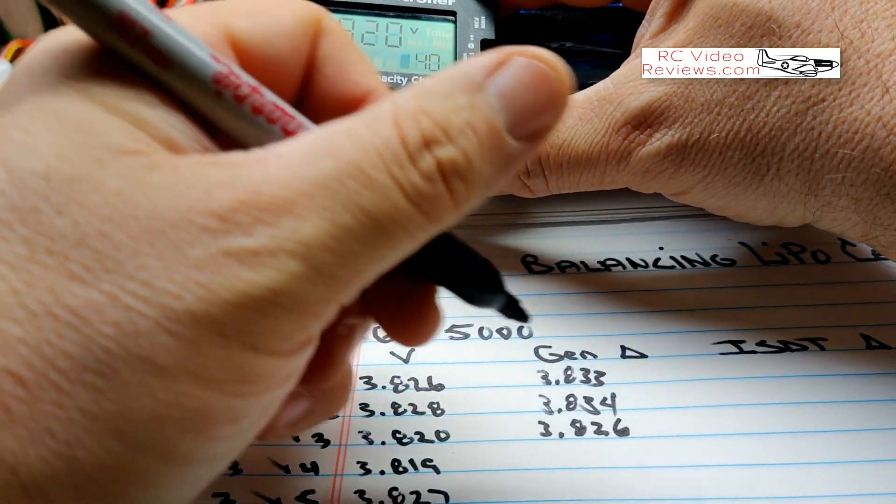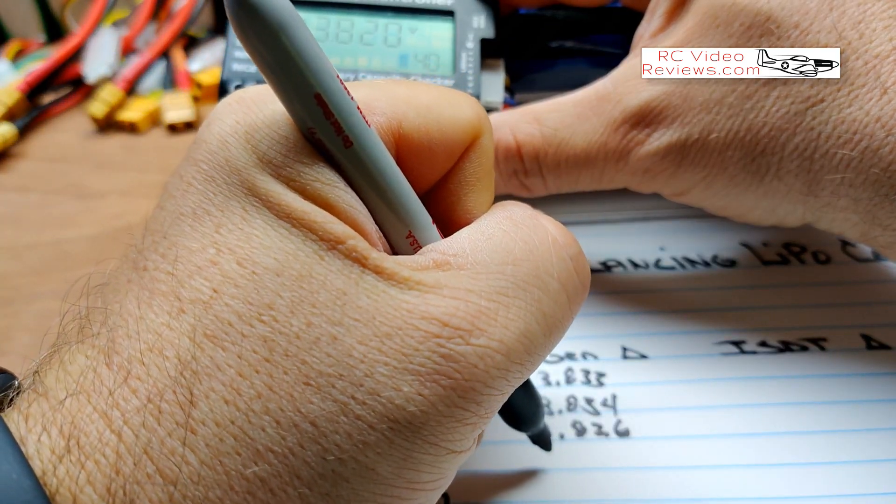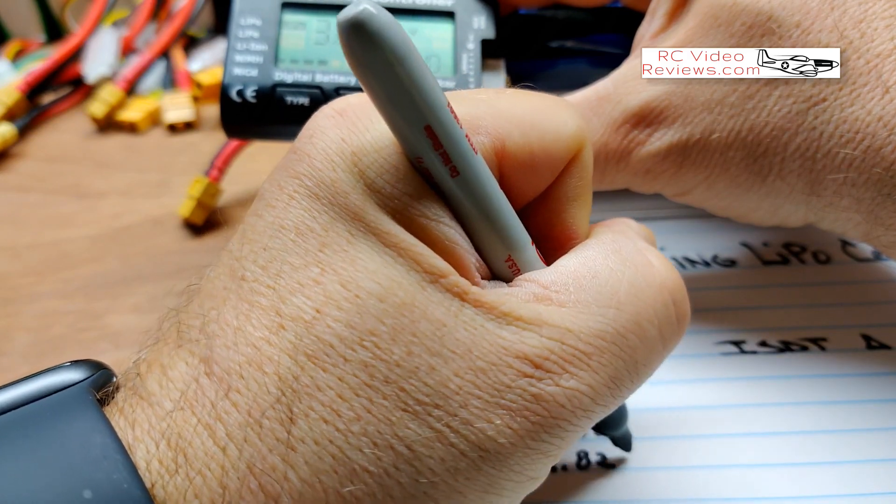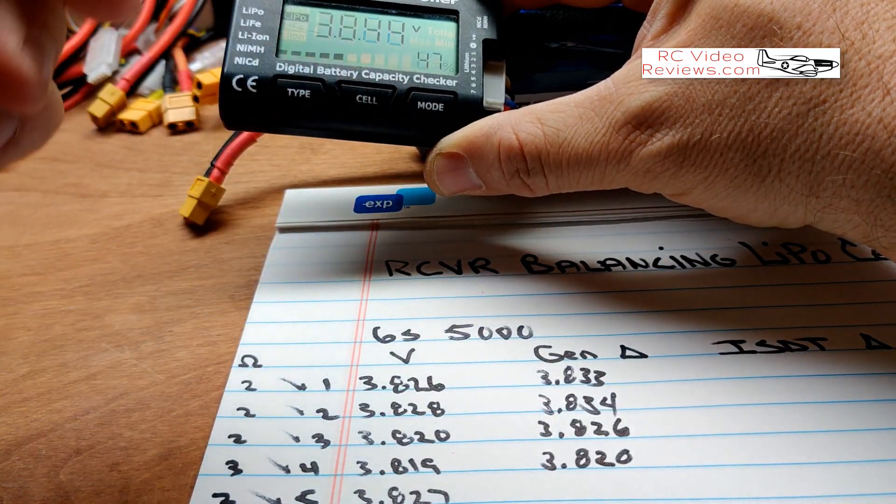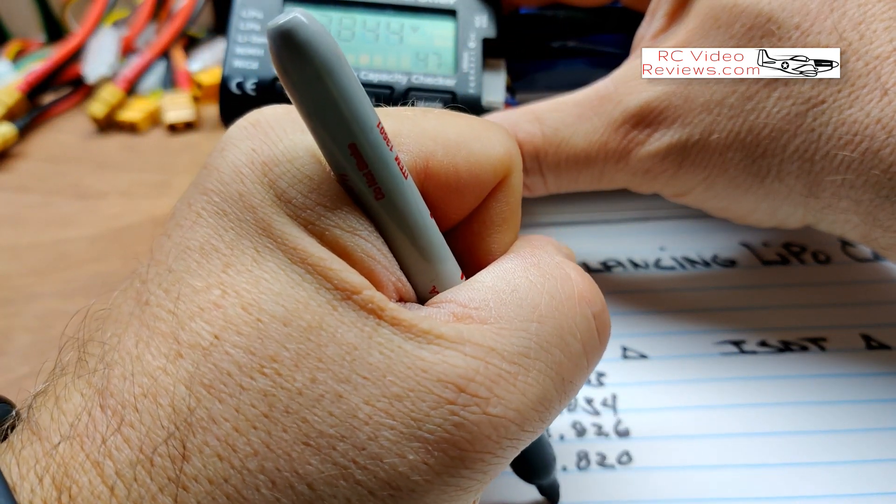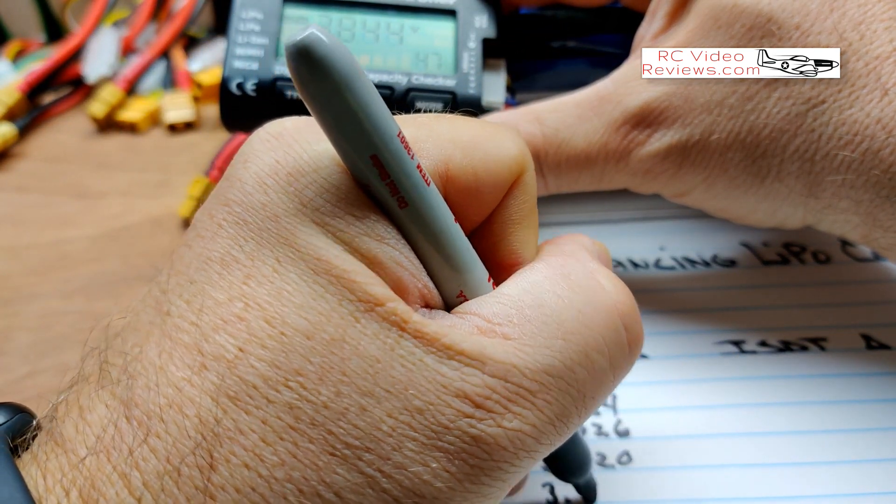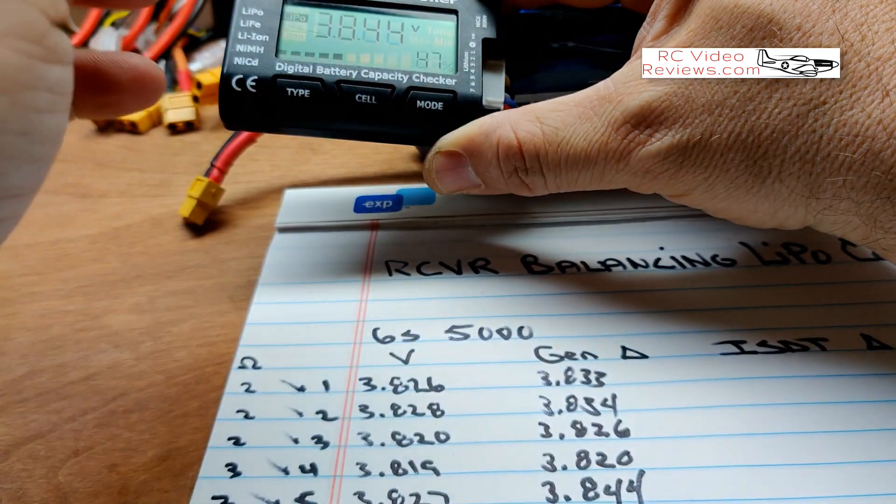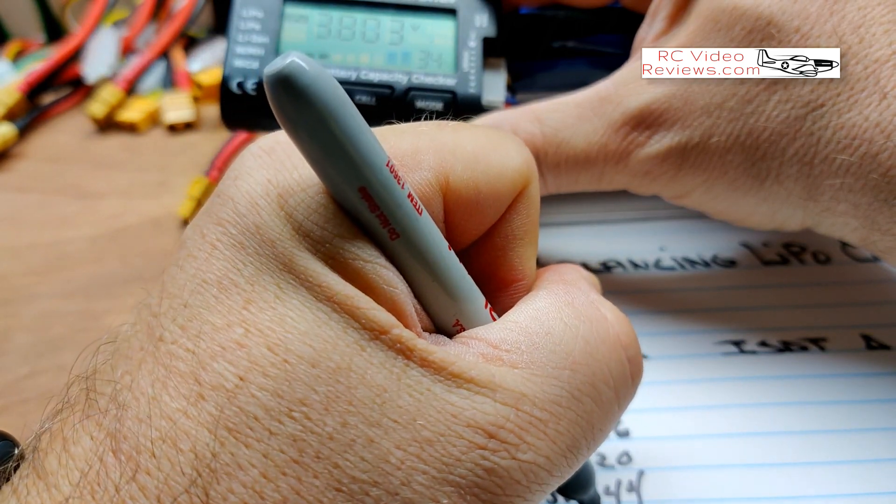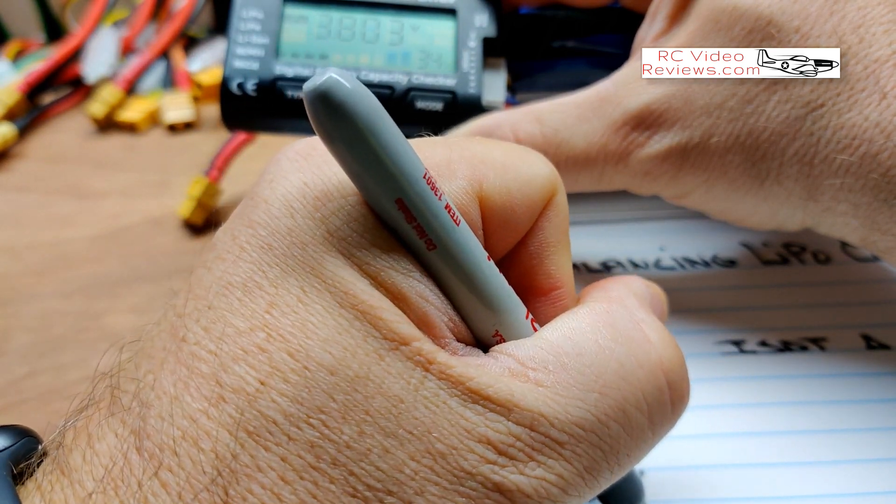Cell number three is 3.826. Oh sorry, that was number three. This is number four, 3.820. And then cell number five is 3.844. And cell number six is 3.803.